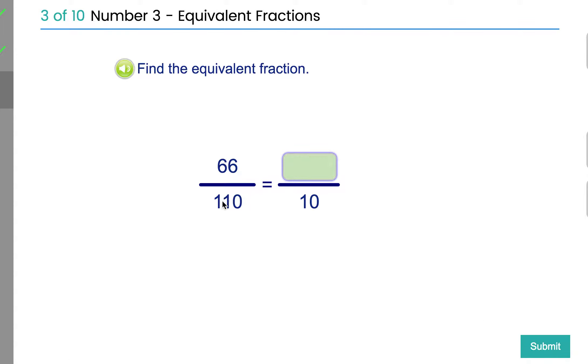A couple more. The bottom number here has gone from 110 to 10. So what has happened here? It's been divided by 11. Divide by 11. It's the 11 times table. Divide by 11. So divide the top by 11 as well. 66 divided by 11 is 6.